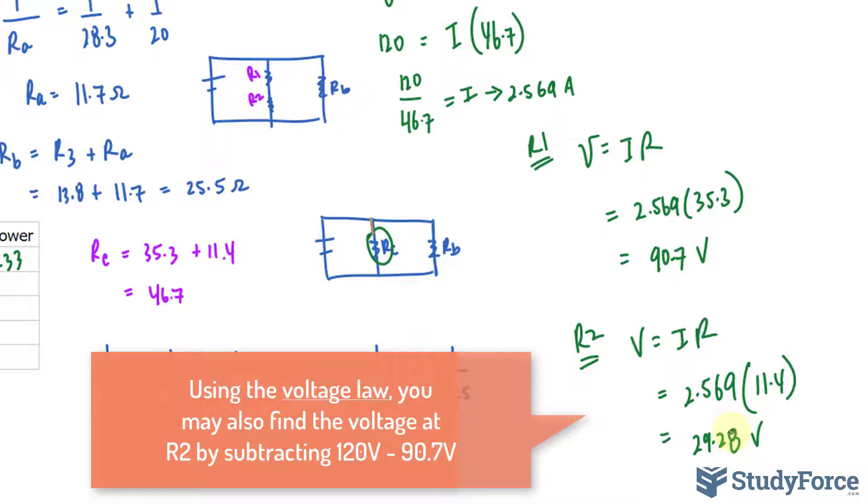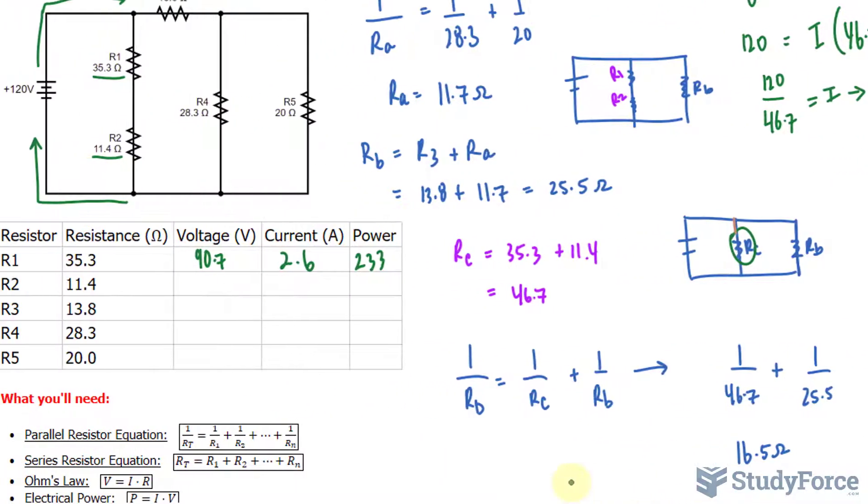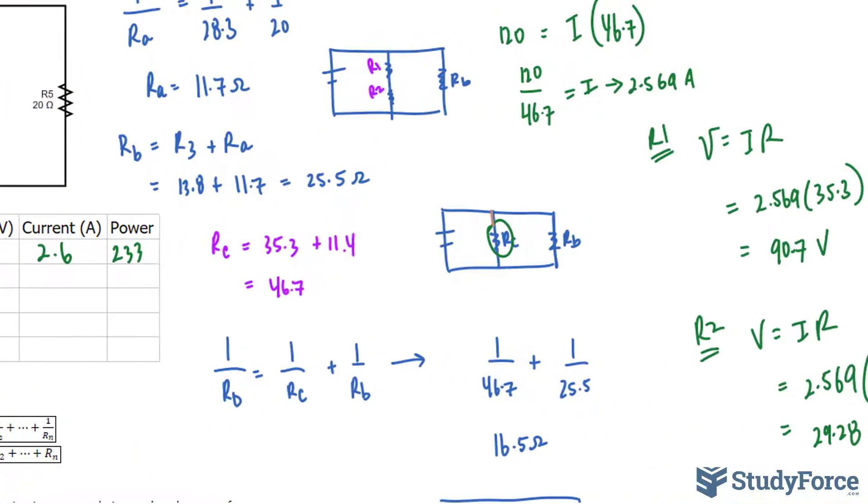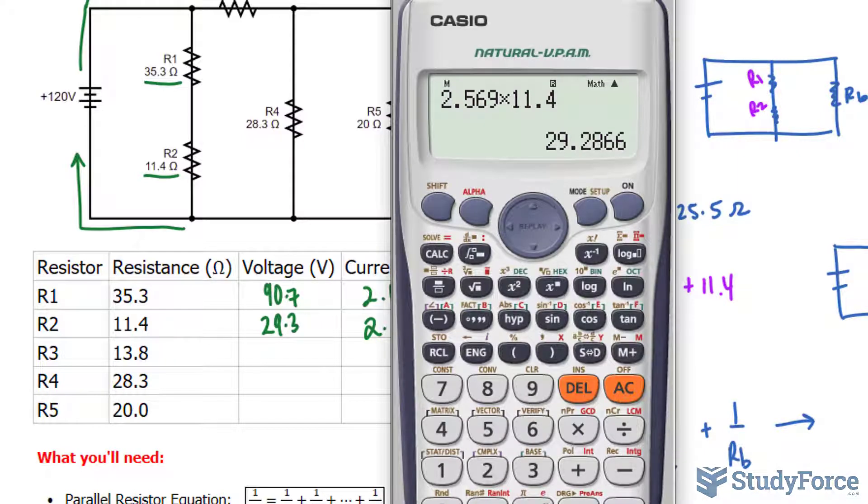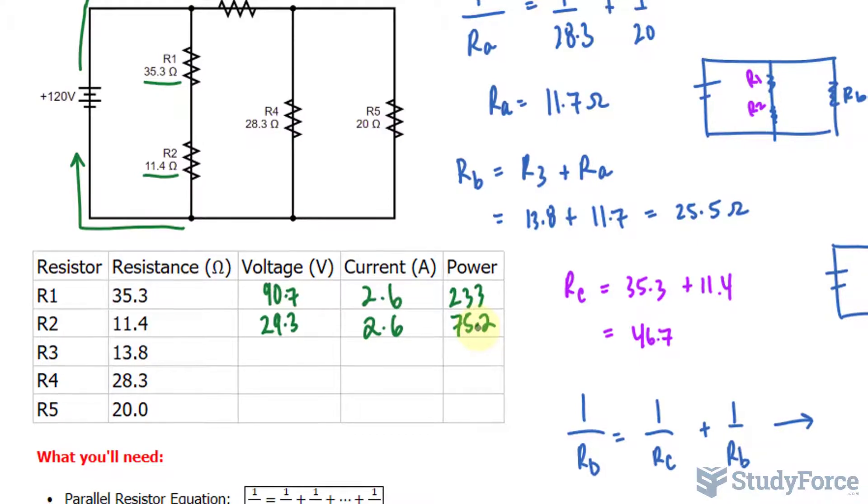If you notice something, adding 90.7 and 29.28 should give you roughly 120 volts. That's something to keep in mind in reference to the law we spoke of earlier. Let me write that down. We have 29.3, the current is 2.6, and multiplying this out gives us 75.2 as the power across resistor 2.